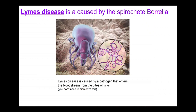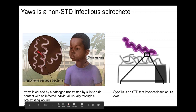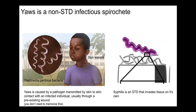Lyme disease is also caused by a spirochete in the genus Borrelia — it's not an STD, but it's another nasty related disease. Yaws is a non-STD infectious spirochete with the same circular spiraling shape. It's actually in the same genus as syphilis but is not an STD, so researchers have often looked to compare and contrast what makes yaws different.